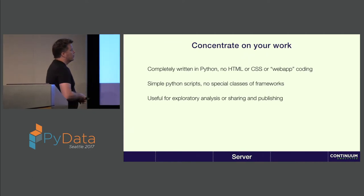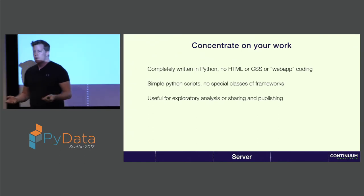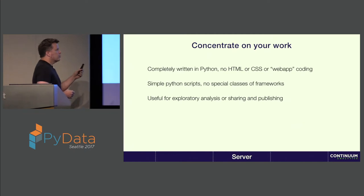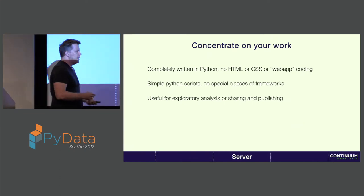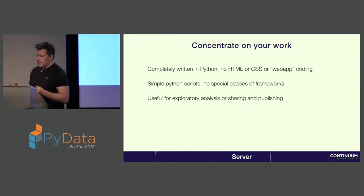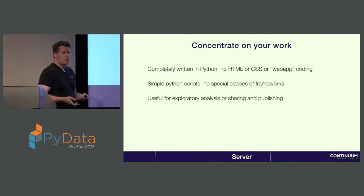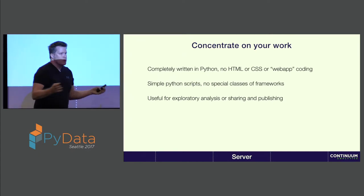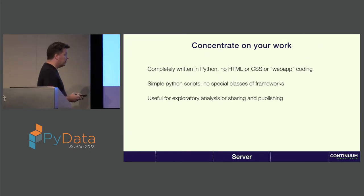Bokeh is also useful for exploratory analysis, but also sharing or publishing. It works in the Jupyter notebook, and we're working on making it work better in JupyterLab. It's good for creating applications, and you can embed standalone documents in Flask, Tornado, Pyramid, or other apps. The Bokeh server is actually very scalable — you can put these applications behind a load balancer and they're very horizontally scalable if you have a lot of users.